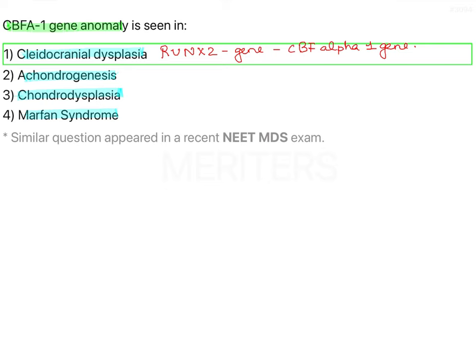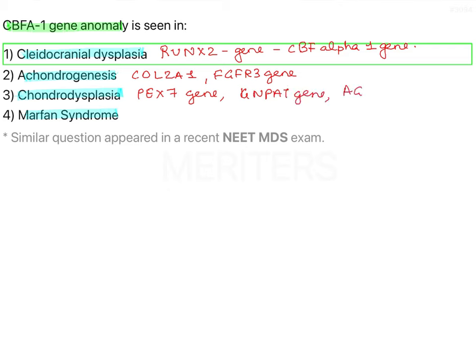The correct answer is cleidocranial dysplasia, but we will discuss all the options since there is a variety of questions that can be asked along these lines. Achondrogenesis is caused by the COL2A1 gene and can also be caused by the FGFR3 gene. Chondrodysplasia is caused by three genes: PEX7, GNPAT, and AGPS. Marfan syndrome is caused by the FBN1 gene.